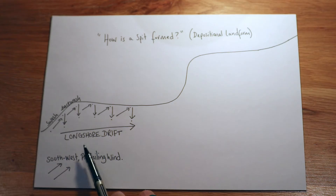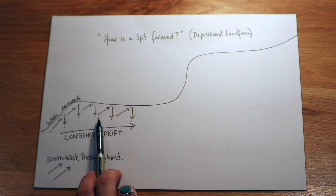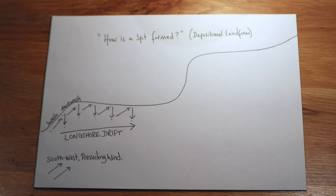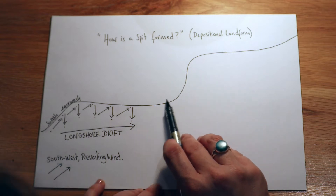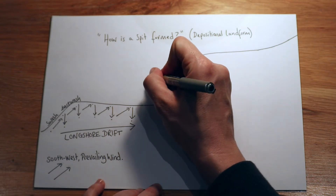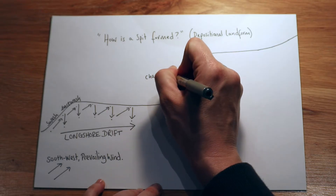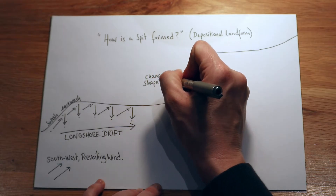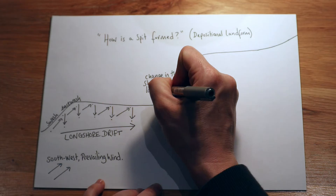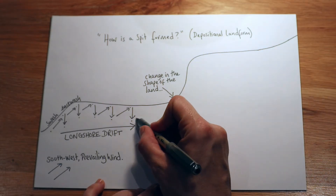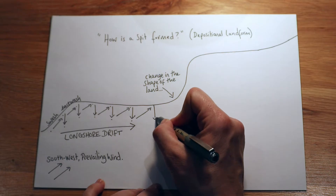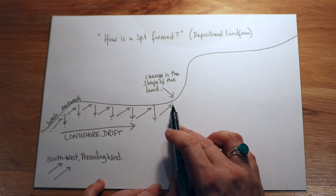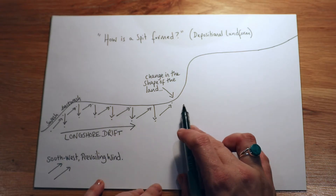Longshore drift isn't a fixed thing — it's a dynamic process. It's a process where sediment is moved along the shore in the direction of the prevailing wind. Now this would happen all day long if it wasn't for this — a change in the shape of the land. This could be, for instance, a river or an estuary. But what happens is our swash keeps going, backwash keeps going, and then it gets interesting because the land's changed shape.